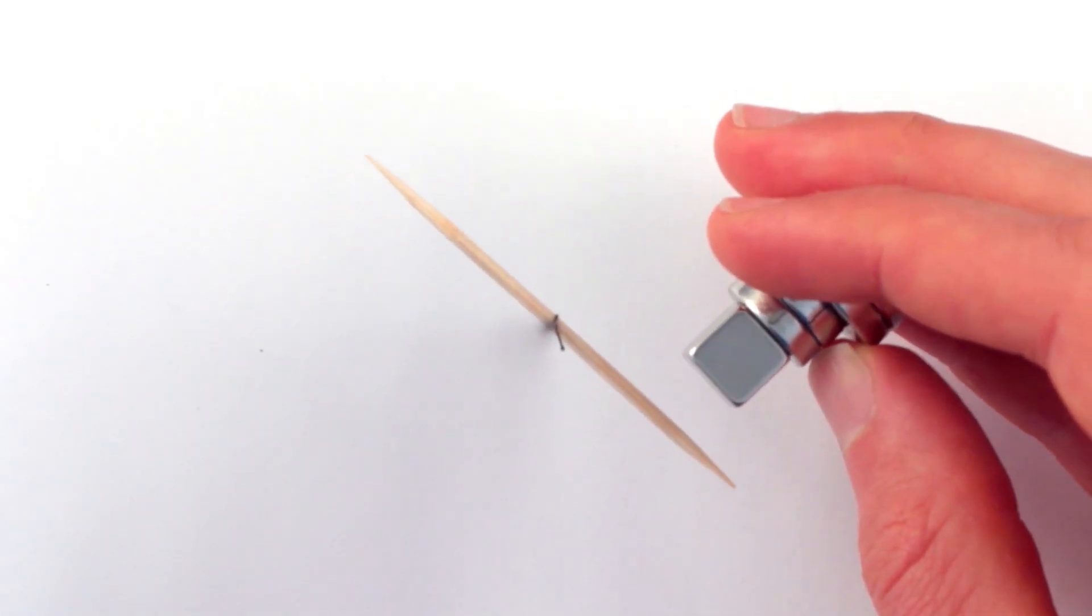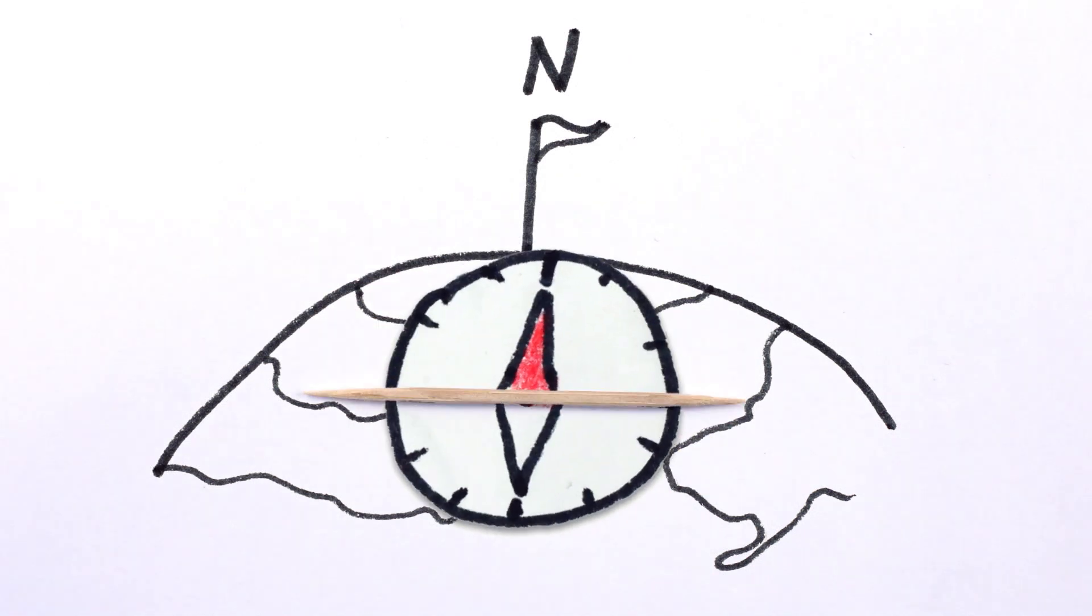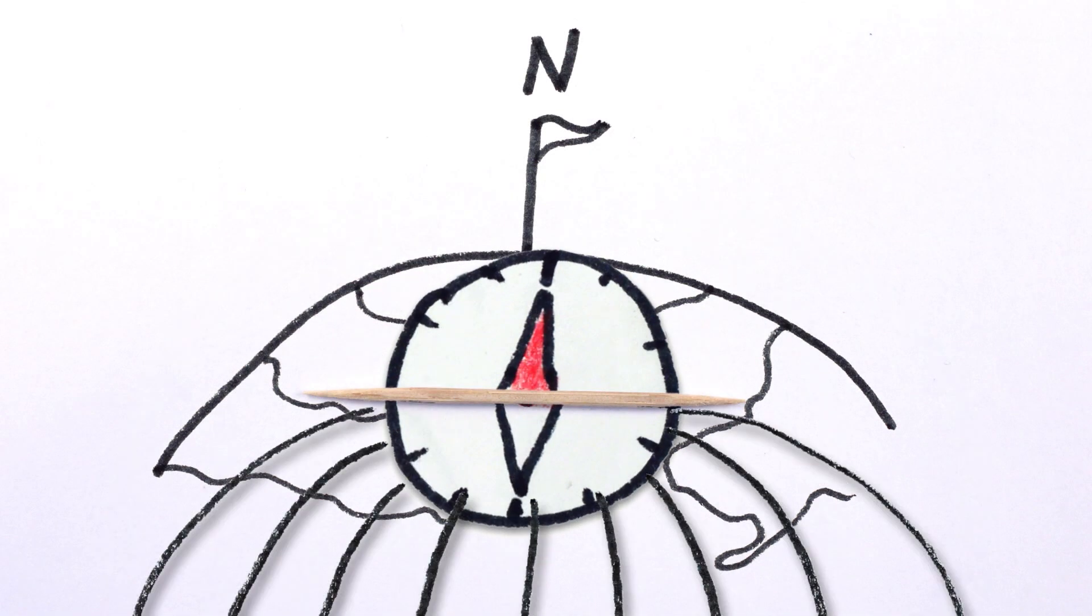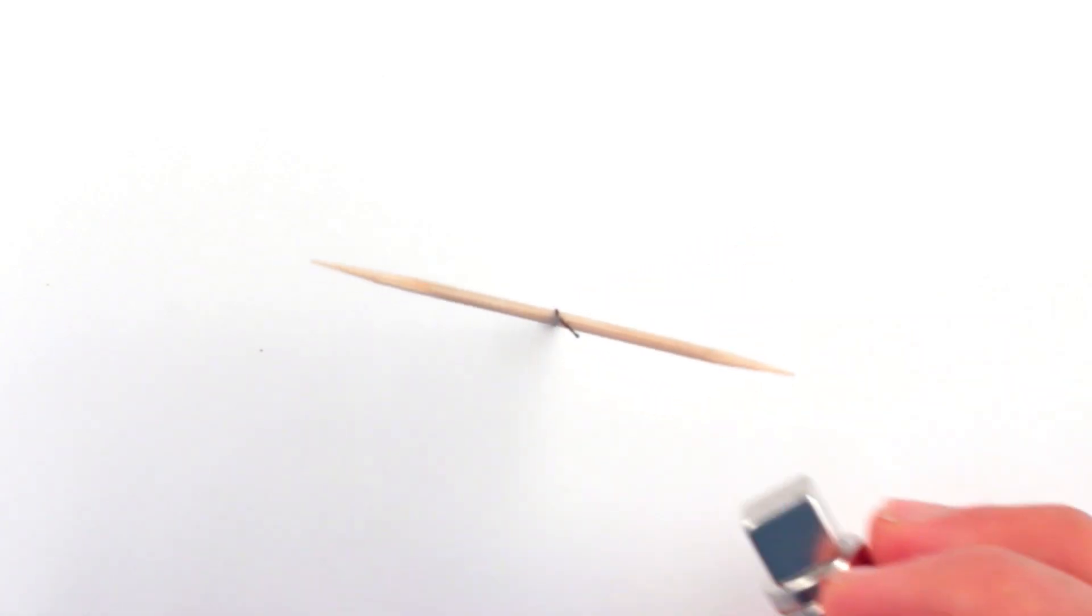Diamagnetic materials will repel a magnet, and a diamagnetic compass will point across the magnetic field, that is, it'll orient east-west.